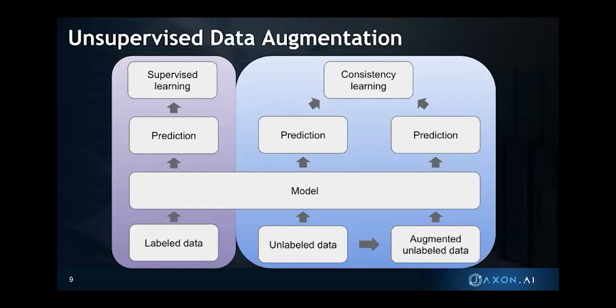We have these two things — supervised learning and consistency learning — going on at the same time while the model trains. It turns out this is a very powerful tool. Even though you have very few labeled examples, the model is learning how to classify those correctly, and even slight variations will be classified into the same thing. Sometimes we make drastic variations — a heavily augmented example from unlabeled data — and say you need to predict these two things the same. In doing so, one example can have a lot of variation and still be classified into the same category. It can take a small amount of labeled data and really generalize well from it.